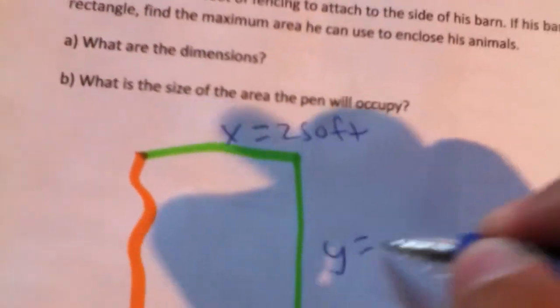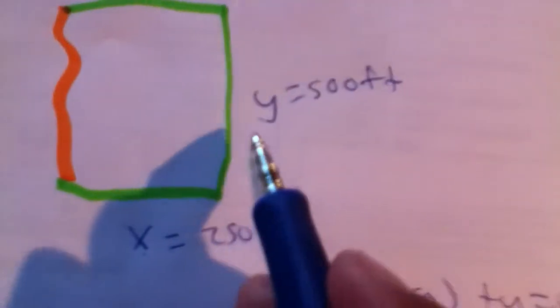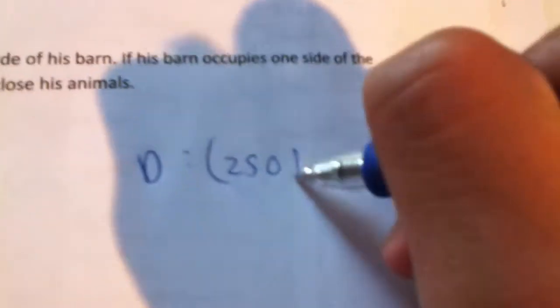Now, over here, it's 500 feet. Now, A is asking what are the dimensions. So, basically, our base times the height. Well, that's simple because we already have our x and our y. So, our dimensions are 250 feet by 500 feet.